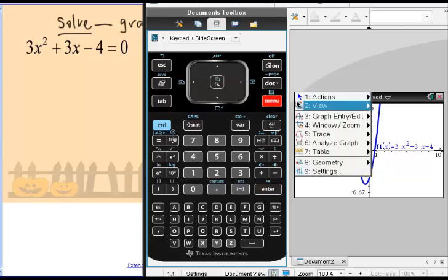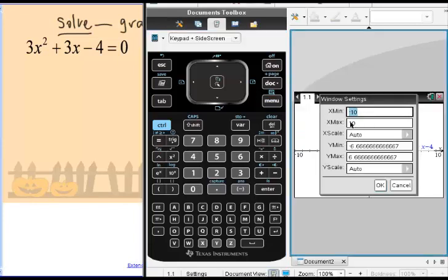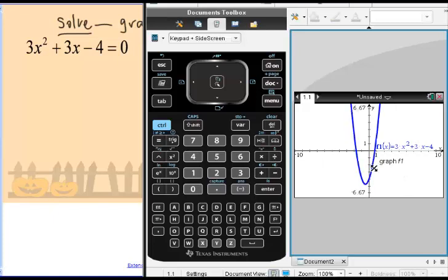Go to window, and then your window settings. You can change these to any numbers that you want. The numbers we have right now work because we can see where the graph crosses the x-axis.